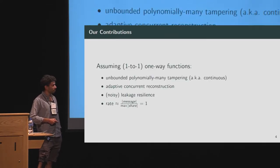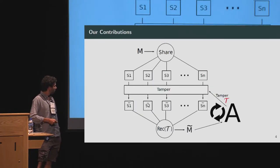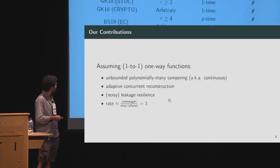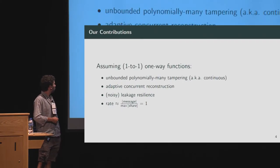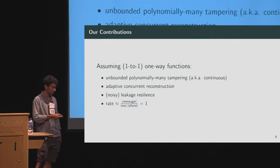We also have the property of adaptive concurrent reconstruction, where the adversary can select the reconstruction set adaptively. Our scheme is additionally noisy leakage resilient, meaning the adversary can leak partial information about the shares. Finally, the rate of our scheme is one — the rate being the ratio between the message size and the maximum share size.